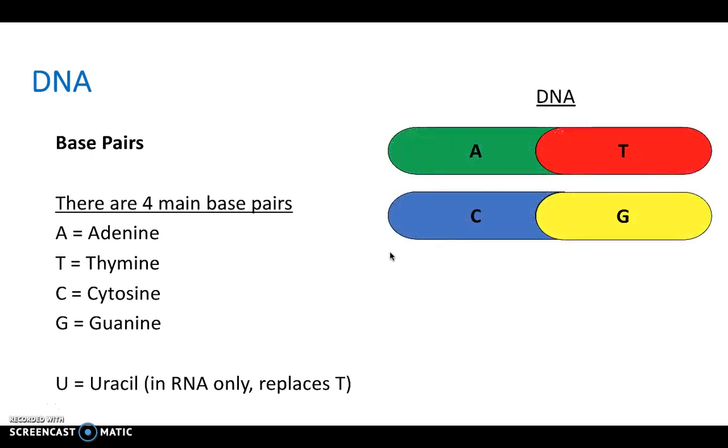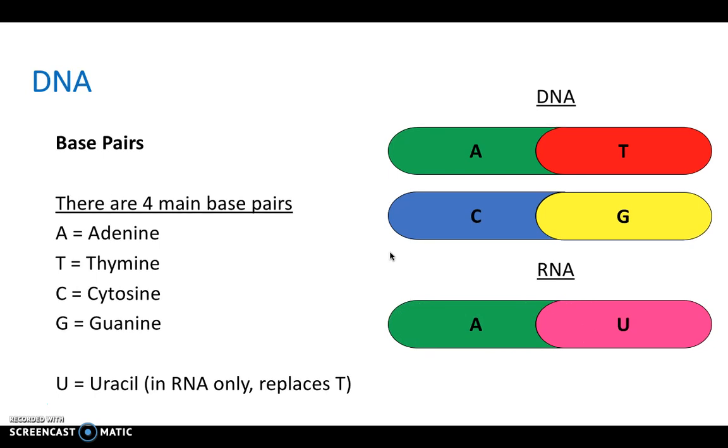So DNA looks a little bit like this. A pairs up with T, and C pairs up with G. They never change their base pairing. A is always with T, and C is always with G. In RNA, A is now with U, because the U has replaced the T, and C remains with G.